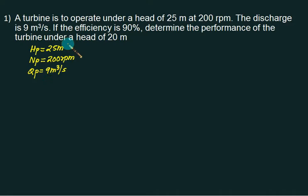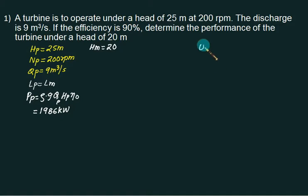And overall efficiency is 90%. Now we want to just check out that if the head was changed to 20, we are using the same turbine. So we have scale ratio equal to 1. So I write the second data for H equals 20 meter. Overall efficiency remains same. We want to check out the speed and discharge. First of all, we will calculate the power. Power equals ρ G Q Hp times overall efficiency. 9810 and Q equals 9, Hp equals 25, overall is 90%. So power of first model is 1986.